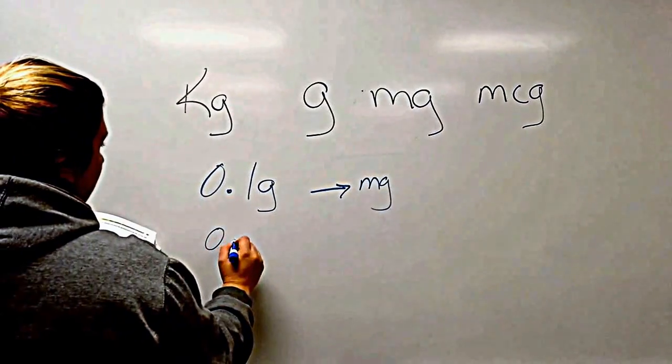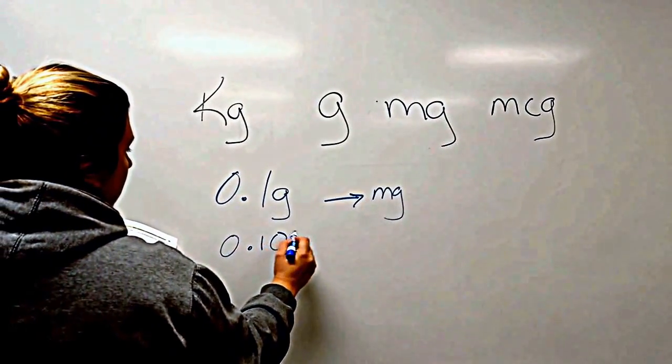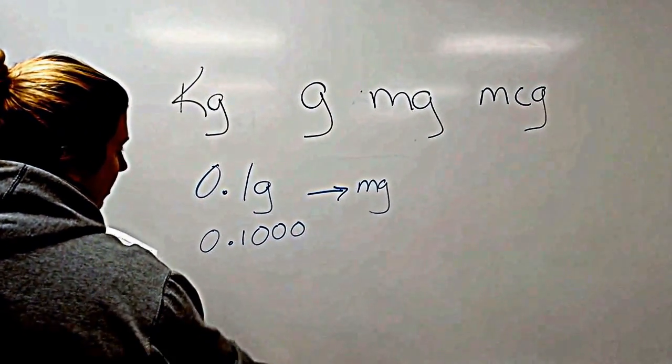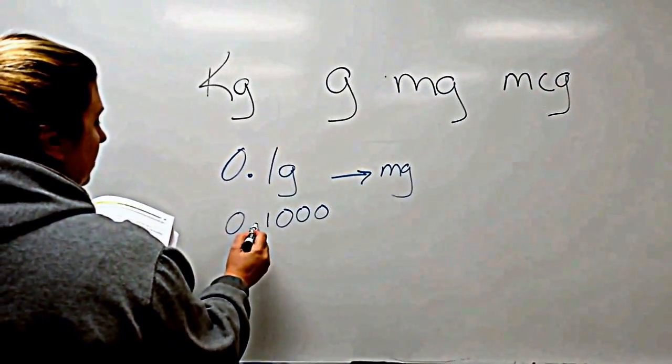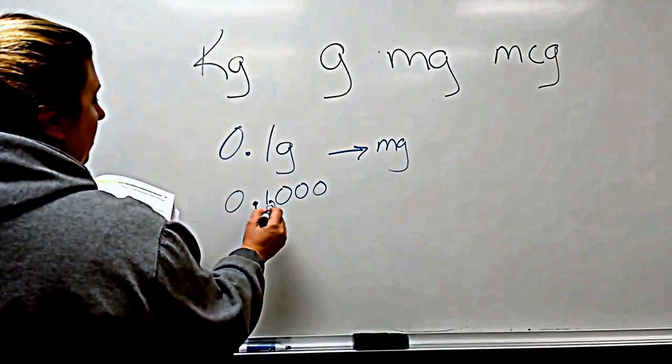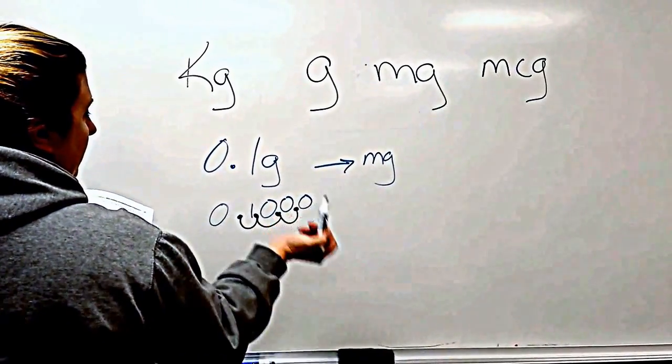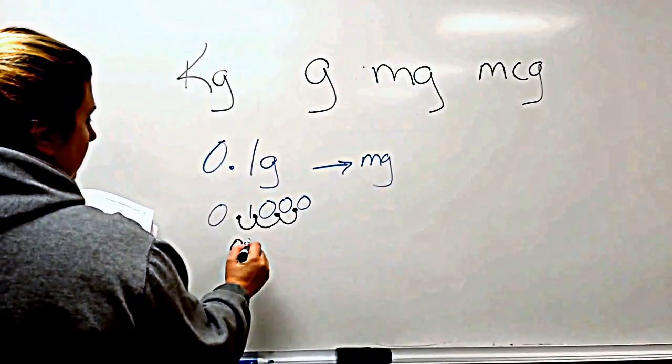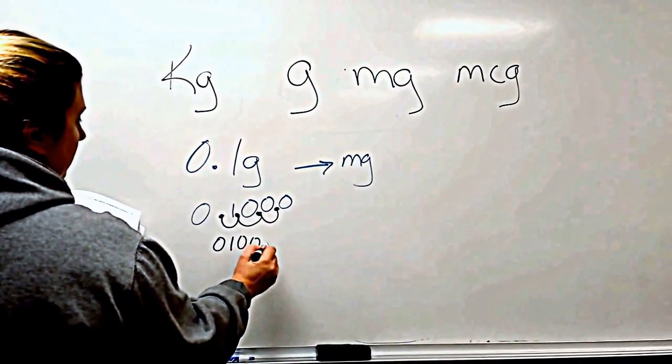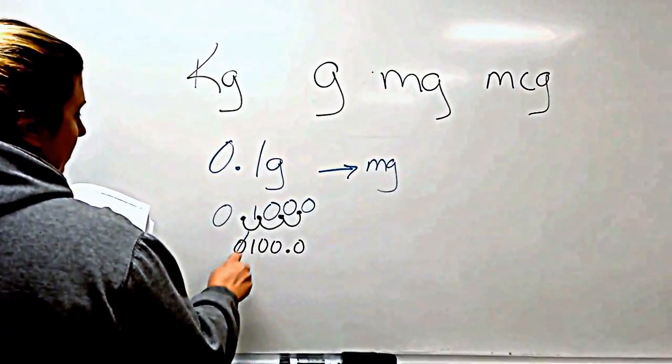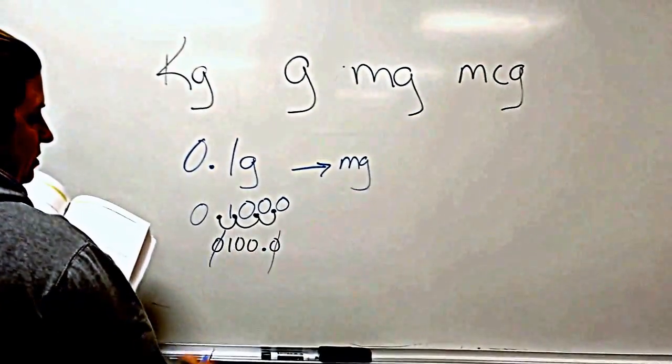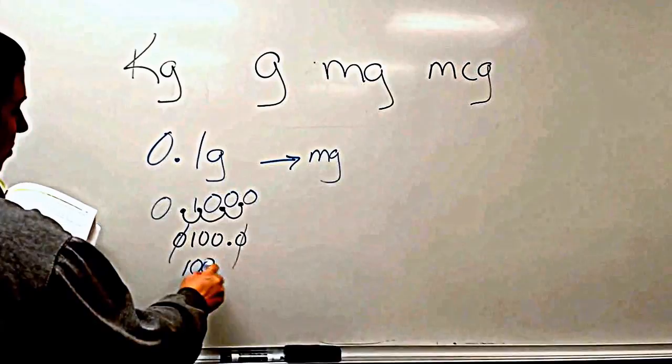So if you take the 0.1 and you just throw some zeros on there, it doesn't change the value because zeros drop off. Right? So they're just nothing. So we're moving the decimal place. One, two, three. So your new number is 0100.0. Again, zeros never lead and they never follow. So your answer is 100.